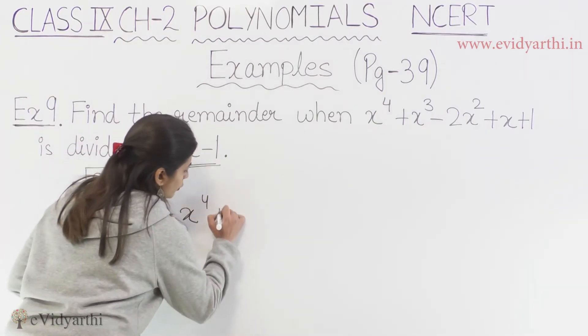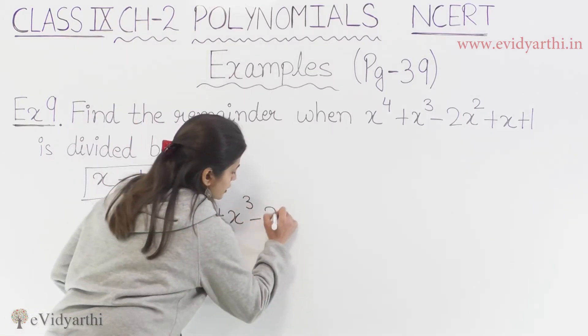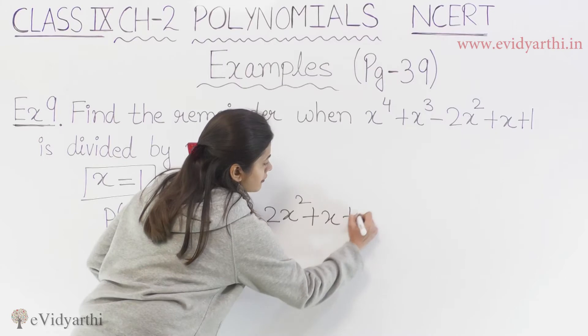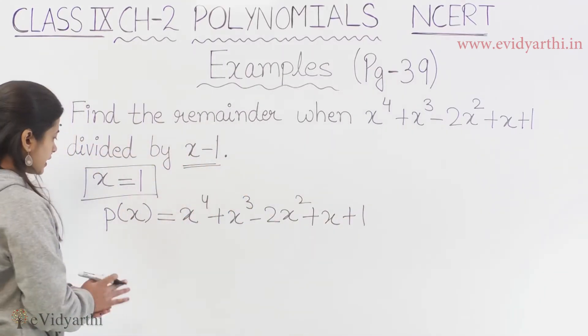We have x ki power 4 plus x ka cube minus 2x ka square plus x plus 1. So we have this as the polynomial.